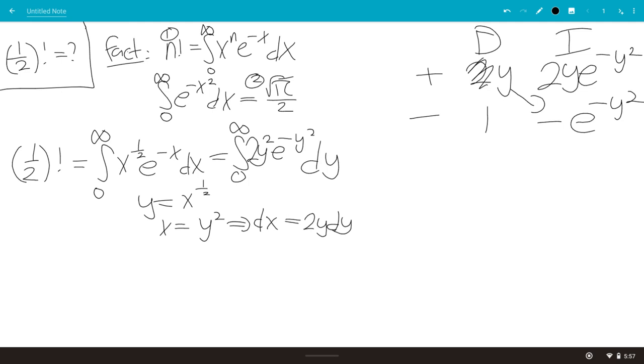And then we do this term times this term, so that would be negative y e to the minus y squared from 0 to infinity. Minus minus minus, so we multiply these terms. So it would be plus integral 0 to infinity of e to the minus y squared dy.